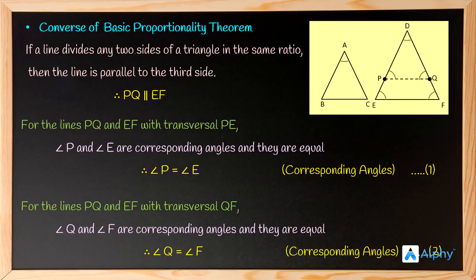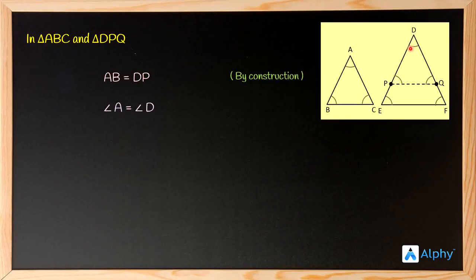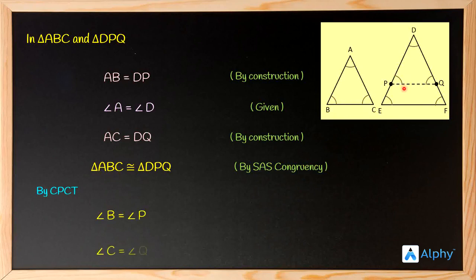In triangles ABC and DPQ: AB equals DP by construction, angle A equals angle D as given, and AC equals DQ by construction. Therefore, triangle ABC is congruent to triangle DPQ by SAS congruency. By CPCT, angle B equals angle P and angle C equals angle Q.